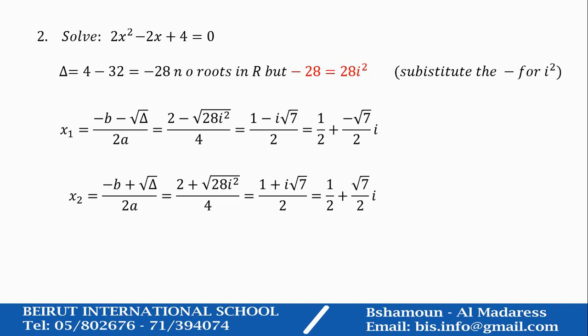Now, we'd like to solve a quadratic trinomial, 2X squared minus 2X plus 4 equals 0. We used to find delta. If delta is negative, we say no roots in R. But today, we know that minus 1 is I squared. You substitute.